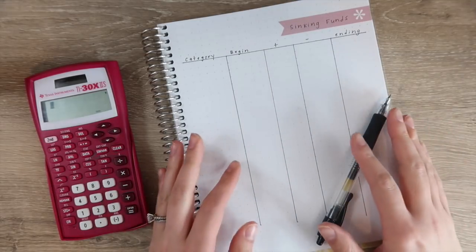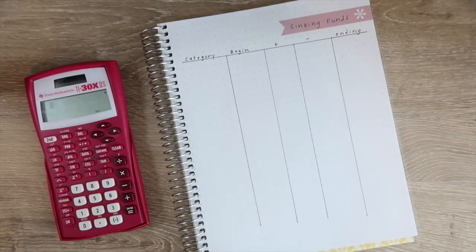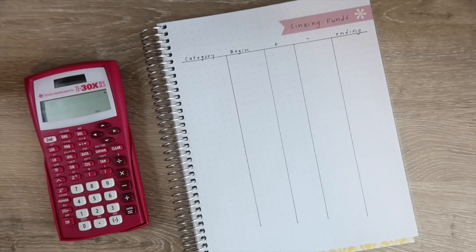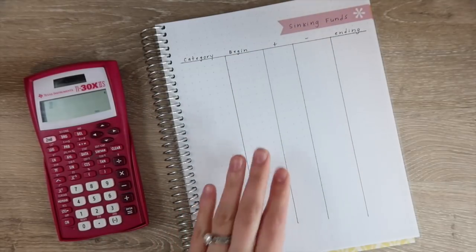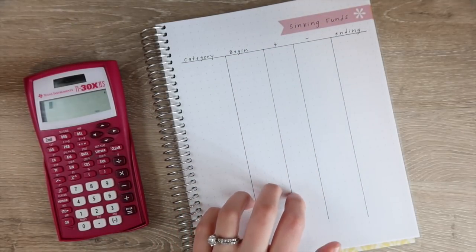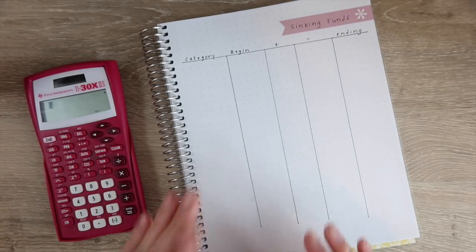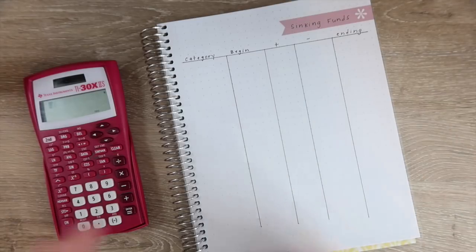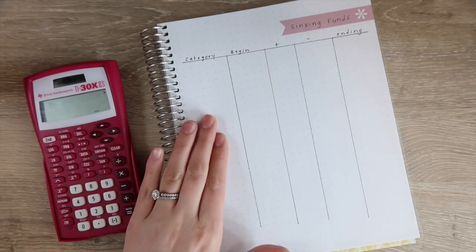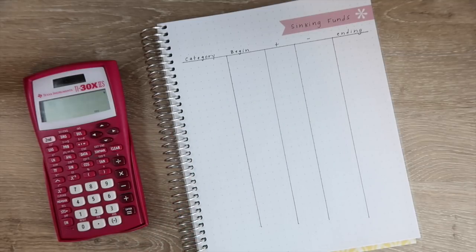As always I have an Erin Condren product. Right now they're doing a launch of the new life planner, so if you're interested in that make sure to use links down below. This is just a dot grid notebook and I've actually seen a few people use these notebooks for budgeting instead of getting an actual planner. The dot grid pages are so awesome for sinking funds. So many people use them that way and I love using the dot grid pages in my deluxe monthly for that.